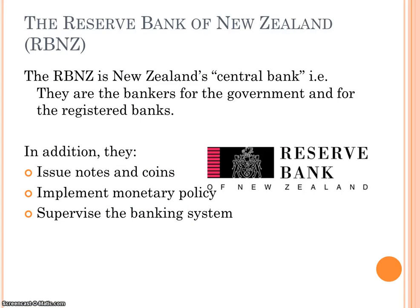The Reserve Bank is really central to this — it's the central bank of New Zealand. That means it's the bank for the government and the banker for all the other banks. So if you've got money in ANZ or ASB, they bank with the Reserve Bank. Based in Wellington, it issues notes and coins, puts monetary policy into place, and supervises the banking system to make sure banks won't fall over and the New Zealand economy stays secure.